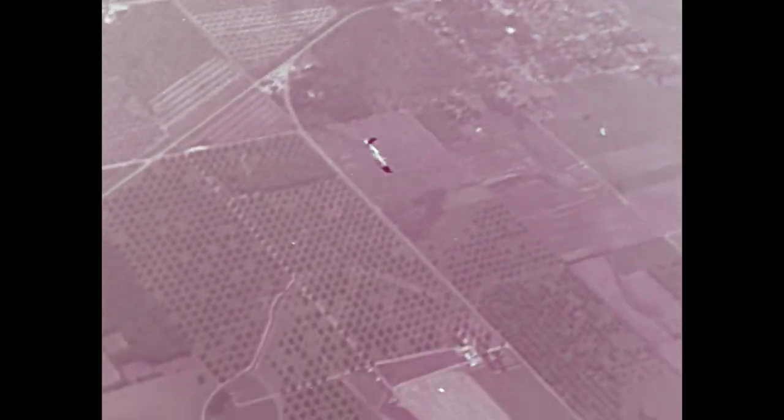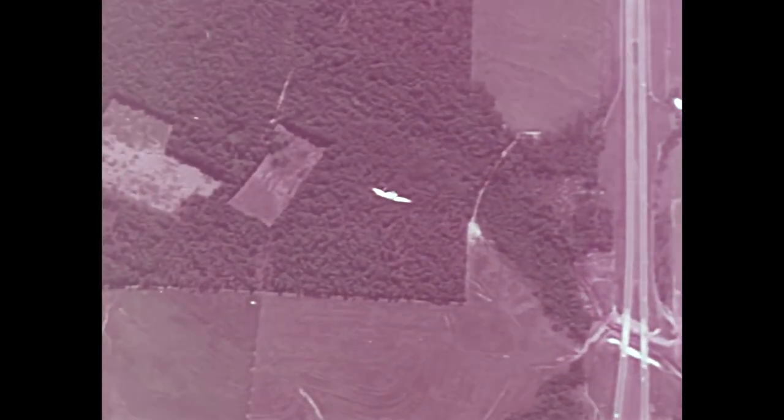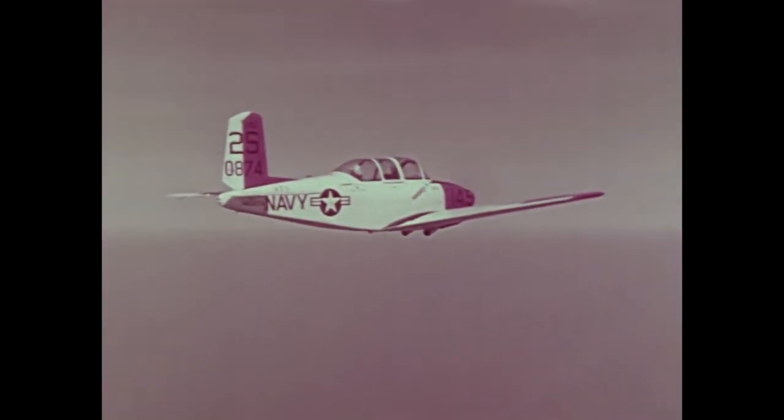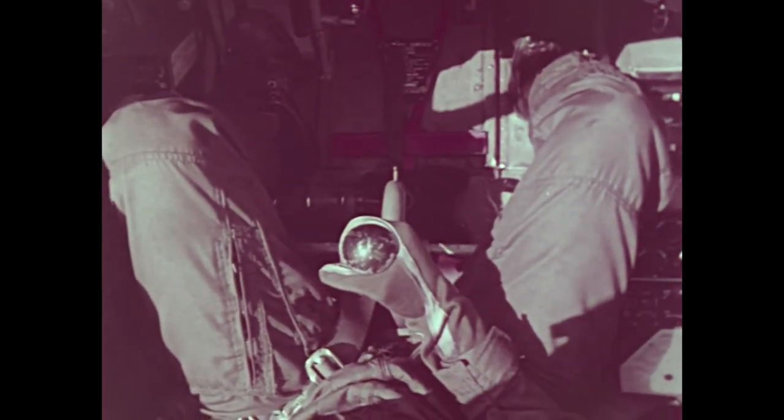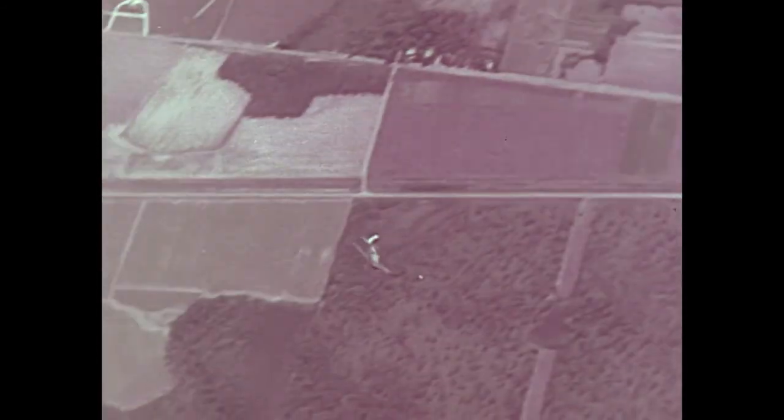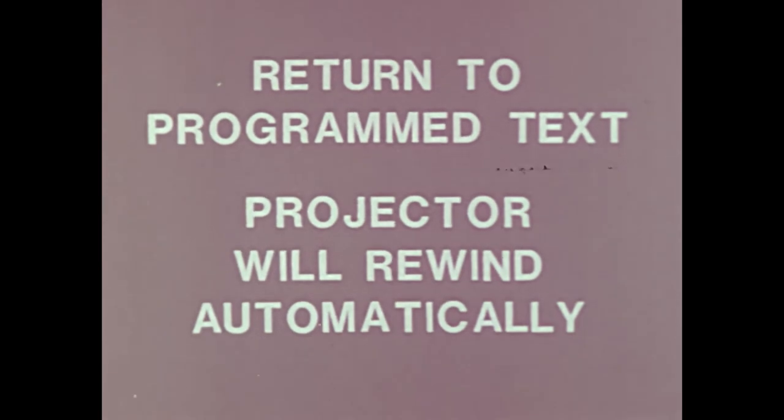The progressive spin is a secondary spin in the opposite direction characterized by an increased rate of rotation and additional loss of altitude. Your instructor will demonstrate a progressive spin to show what can occur if improper recovery procedures are used in recovering from a normal spin. The instructor will enter a normal spin and at the completion of one turn, if below 95 knots, apply full opposite rudder while holding full back stick. The aircraft will then start spinning in the opposite direction. The instructor will then immediately recover as from a normal spin. This completes the unit on progressive spin.